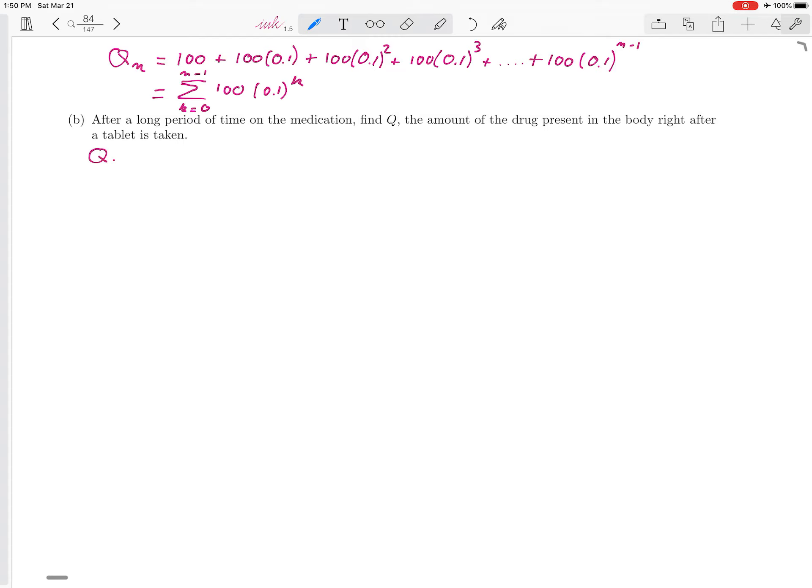Let's look at this again. So we already know Q1 was 100, Q2 was 110, Q3 was 111, and Q4 was 111.1.